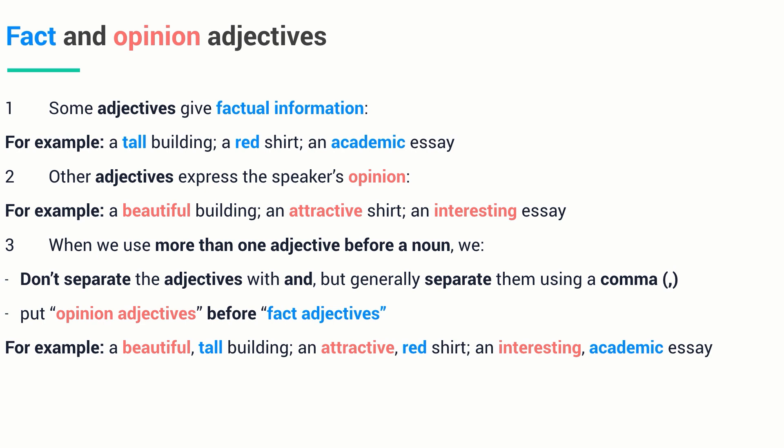As you can see, the opinion adjectives including beautiful, attractive, and interesting are put before the fact adjectives tall, red, and academic, respectively.